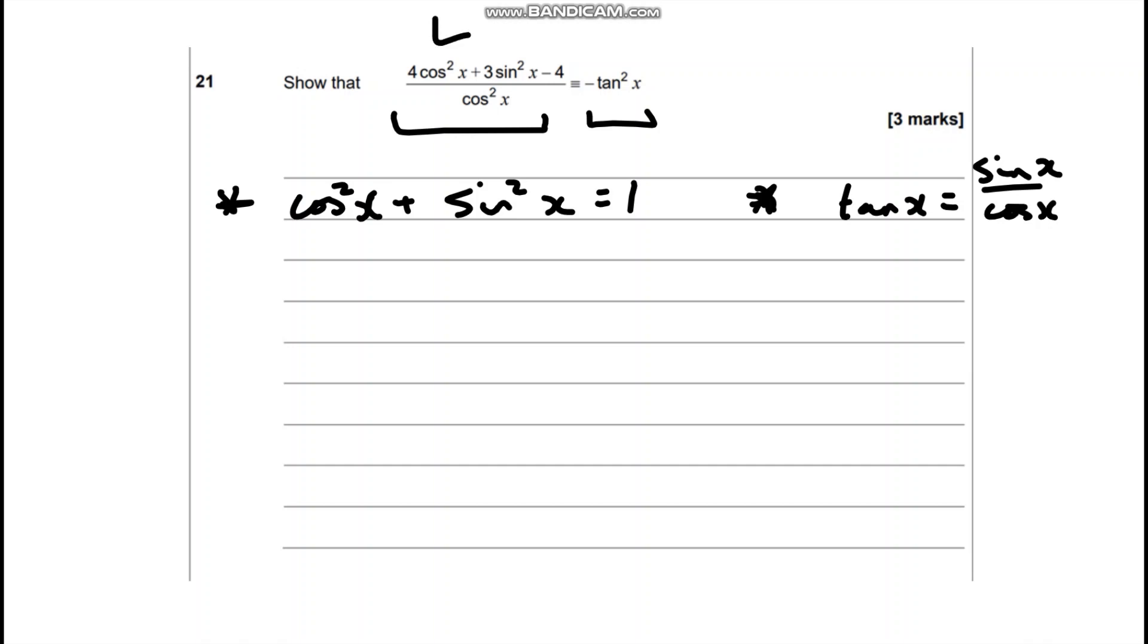So I'm going to look at my left hand side and somehow make it to try and look like my right hand side. So my left hand side is 4 lots of cos squared x plus 3 sine squared x, take away 4 all over cos squared x.